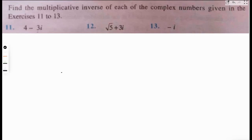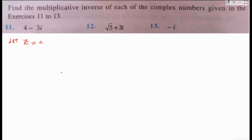We'll start with question number 11. Let z be the complex number 4 minus 3i. We know that z inverse, that is the multiplicative inverse of z, is given to be 1 upon z. But this is true only when z is not 0.